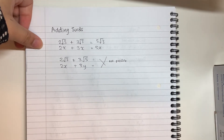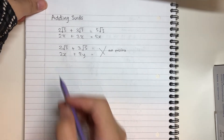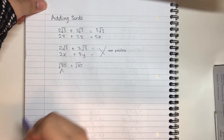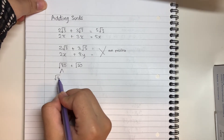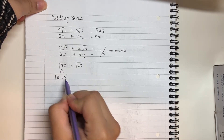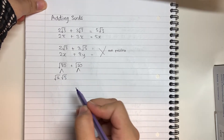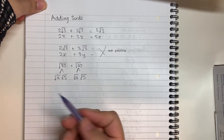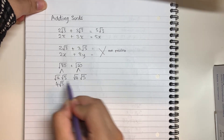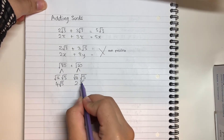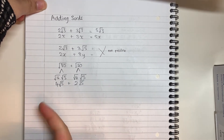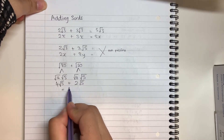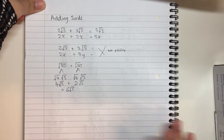We can also subtract them. Let's go for an example: root 80 plus root 20. The biggest square number that goes into 80 is 16, and 80 divided by 16 gives me 5. Root 16 simplifies to 4, leaving me with 4 root 5. The biggest square number that goes into 20 is 4, and 20 divided by 4 is 5. Root 4 simplifies to 2, leaving me with 2 root 5. So 4 root 5 plus 2 root 5 — say root 5 is a banana, 4 bananas plus 2 bananas gives me 6 — so the answer is 6 root 5.